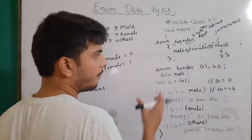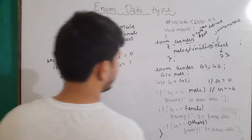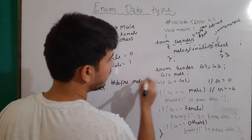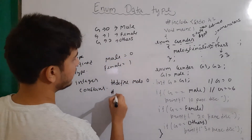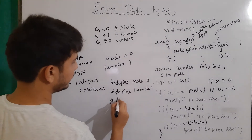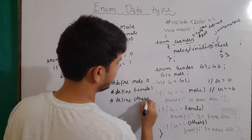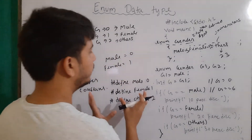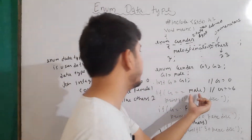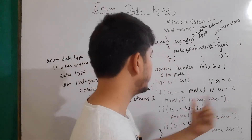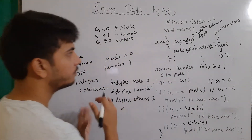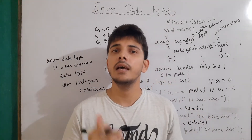Now, if you remember about macros, the same thing could also be achieved using the #define preprocessor directive. For the same thing, I can write #define male with value 0, then similarly another macro with female value of 1, and then #define others with the value of 2. The same thing is achieved here also. So you can use either macros or you can use enums. What is the difference between using macros and enumerated data types? Let's talk about it.